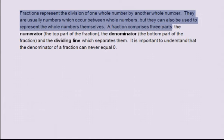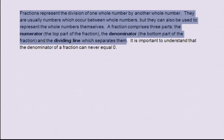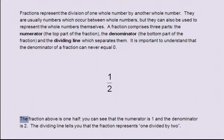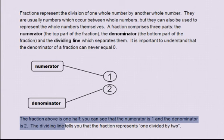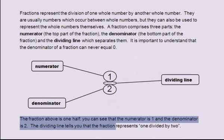A fraction comprises three parts: the numerator, the top part of the fraction; the denominator, the bottom part of the fraction; and the dividing line which separates them. It is important to understand that the denominator of a fraction can never be zero. The fraction above is one half — you can see that the numerator is one and the denominator is two. The dividing line tells you that the fraction represents one divided by two.